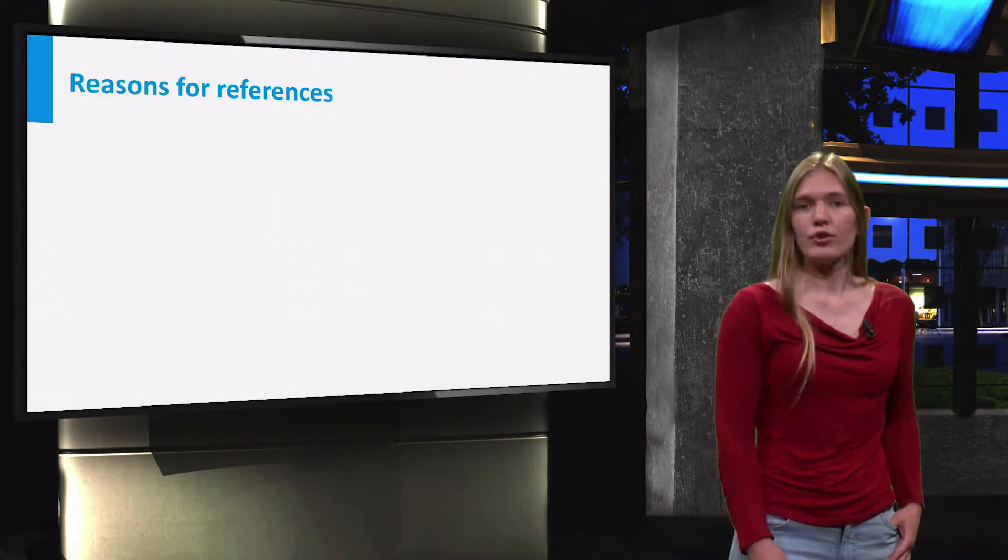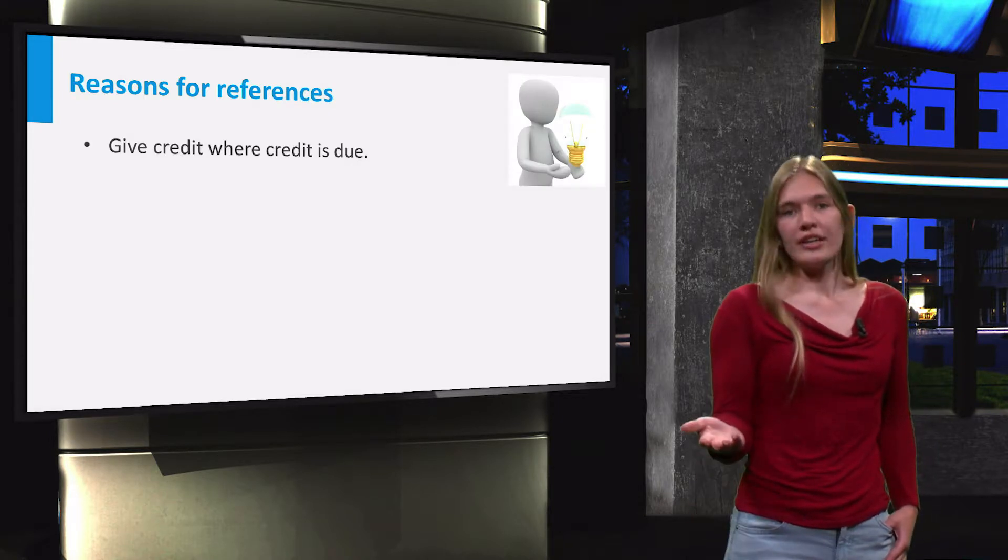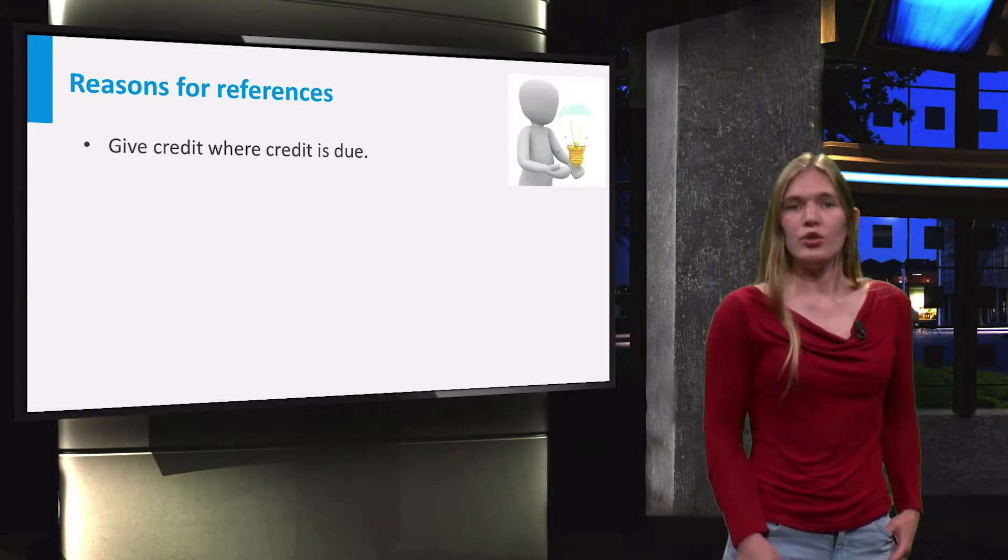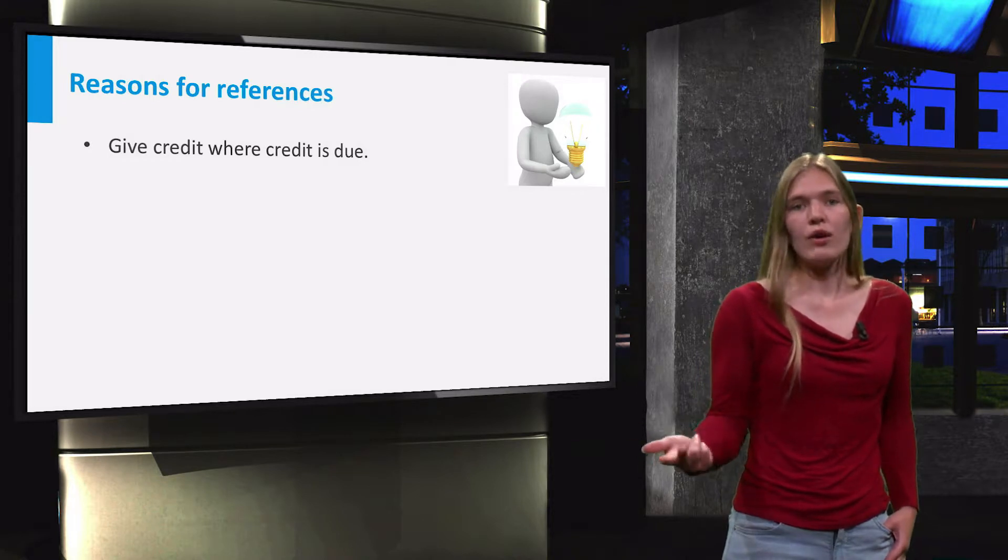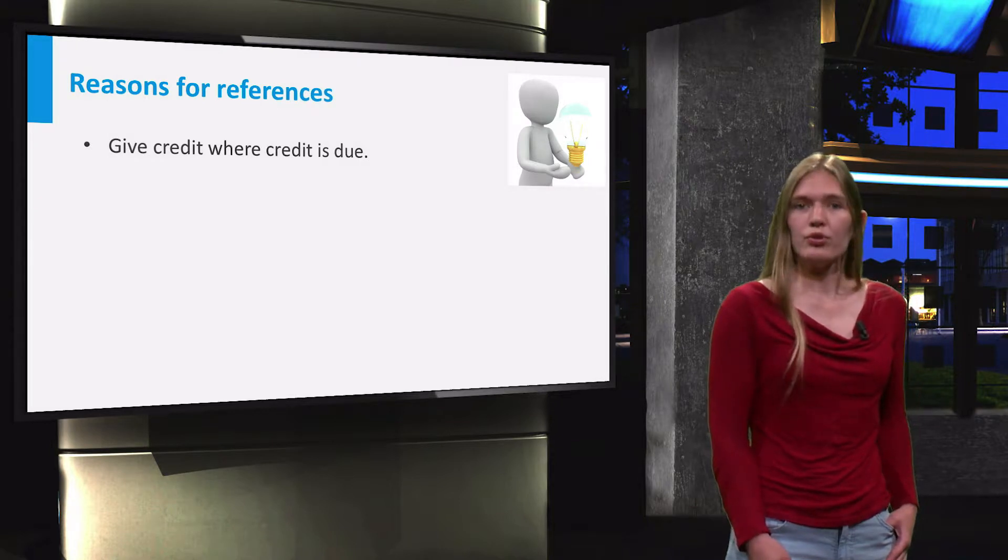References or citations are given for several reasons. First of all, you need to give credit where credit is due. When using a result, model, formula or figure created by someone else, you should not pass it off as your own. To avoid confusion, you should state explicitly whose work it is.